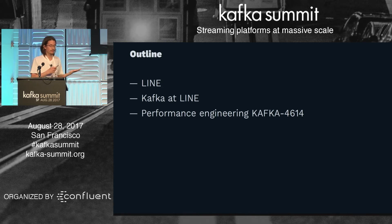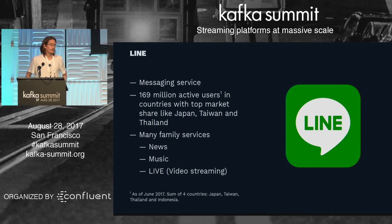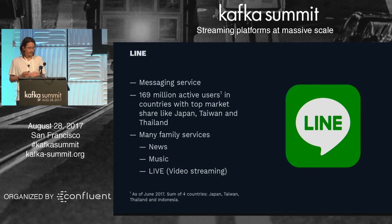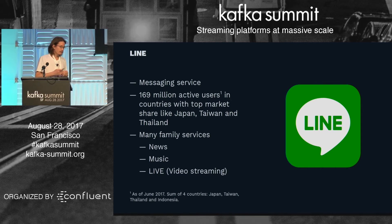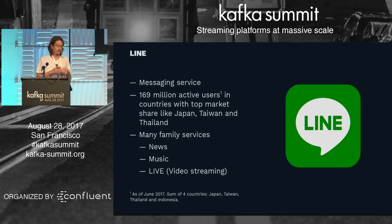This led me to contribute to Kafka 4.6 upstream. First of all, LINE is a messaging service. It offers basic messaging functionalities such as texting, free phone calls, video, and image transfer. Our service has about 169 million active users in Asian countries where we have the majority of share, like Japan, Taiwan, and Thailand. We also provide various family services around that messaging functionality, such as news, music streaming, and personal live video streaming.